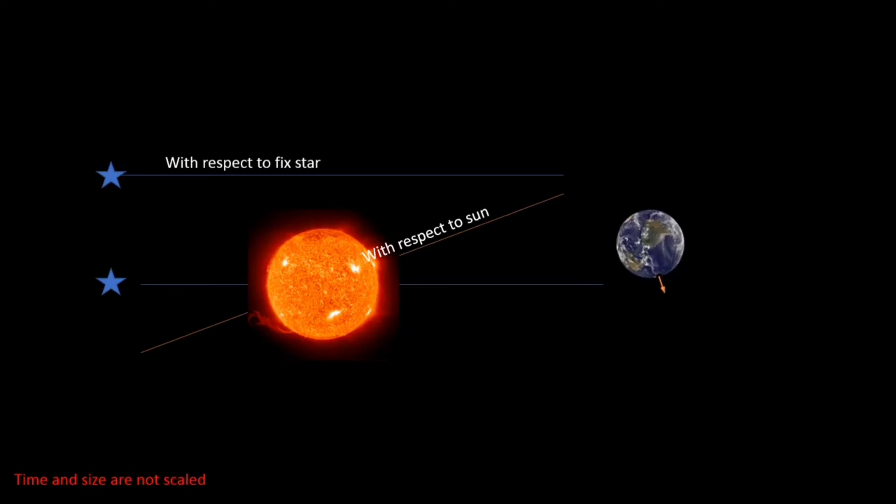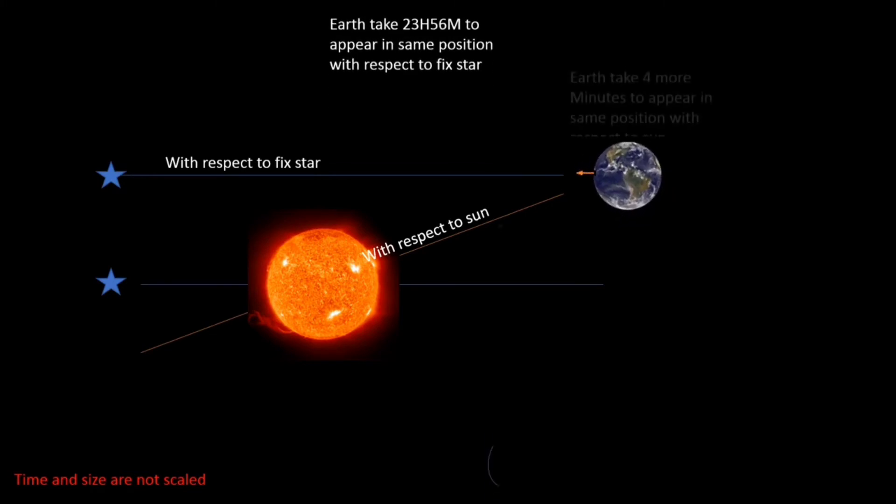Sidereal day happens when Earth completes 360 degrees on its rotational axis. This was calculated with respect to a fixed star in the sky. It takes 23 hours and 56 minutes by the star to appear at the same point in the sky, which is known as a sidereal day.